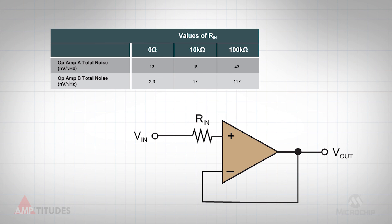For a high impedance application, such as a pH meter or an oscillator, using an amplifier with a low current noise is critical, as that source can quickly become the dominant noise factor.